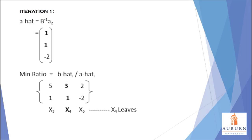Since X2 was selected to enter the basis, we need to select a variable that is going to leave the basis. We do this by the min ratio test. To perform the test, we have to calculate A-hat, which is the inverse B matrix multiplied by the column vector of the original A matrix that is associated with the entering decision variable. In this case, we use the column vector for X2, which is also A2 in the A matrix.